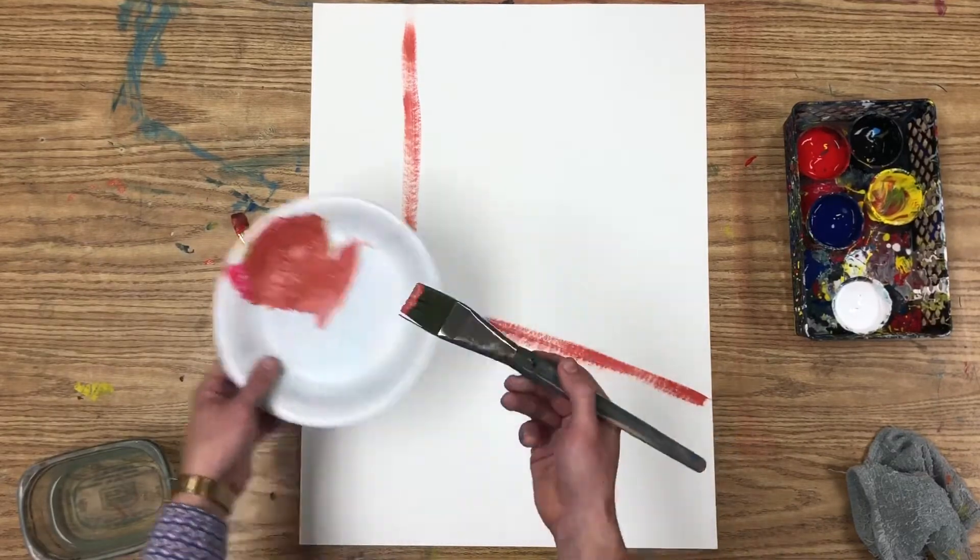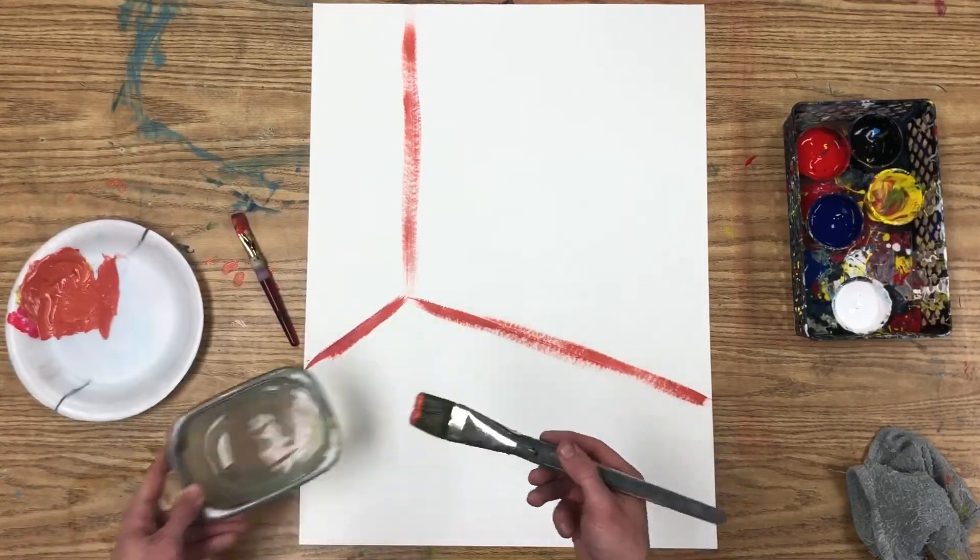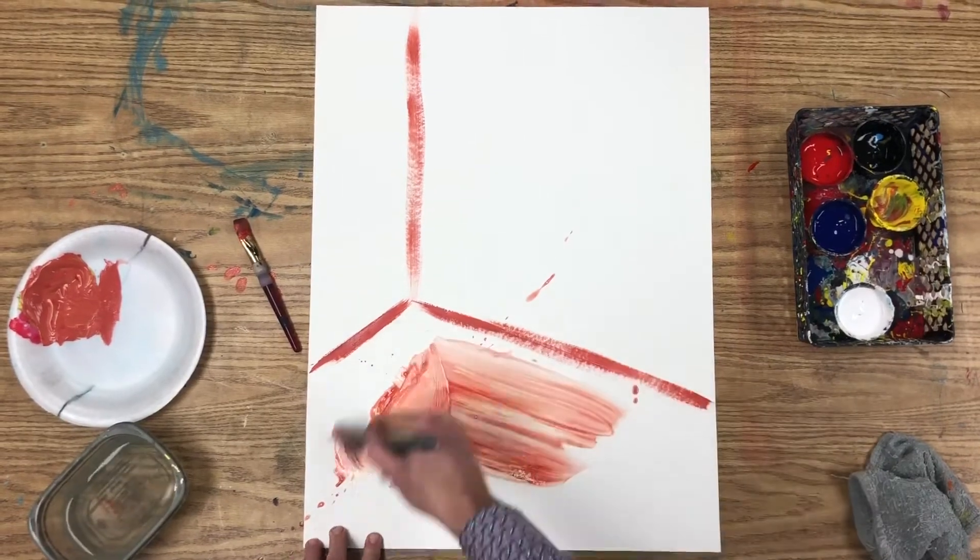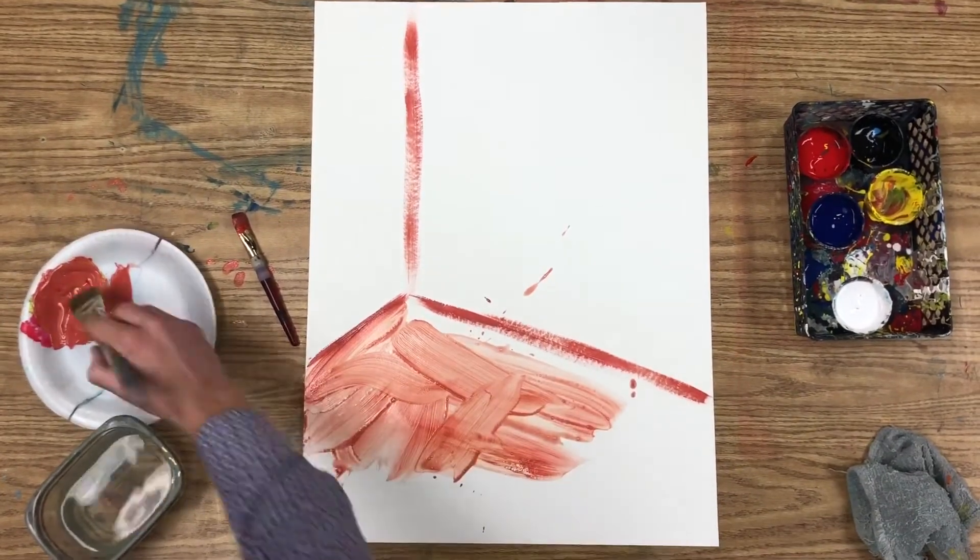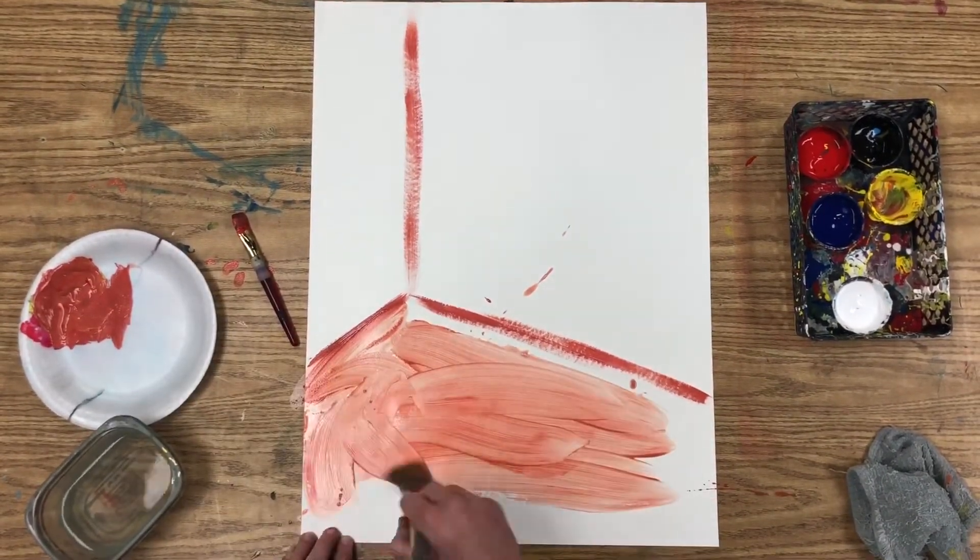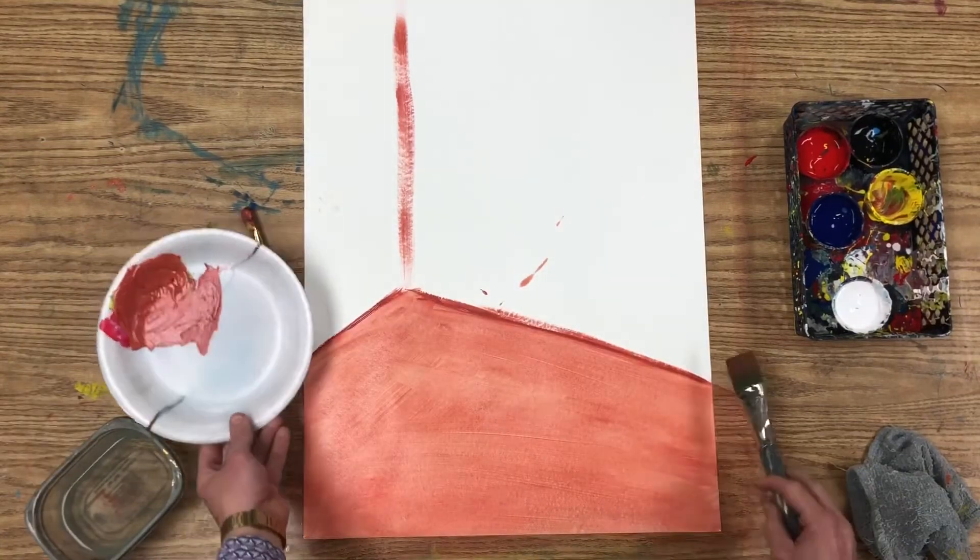I'm going to do the floor first. Since the floor is medium light, I'm just going to use regular paint and water to make it thin since this is the background. And paint a thin wash of that red-orange color all the way across the floor of my painting.